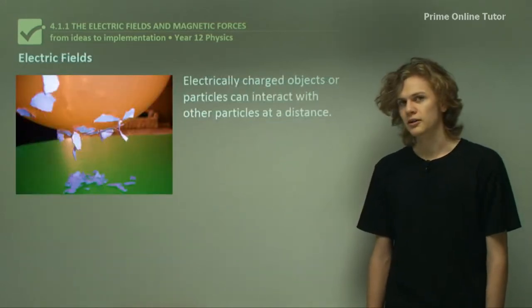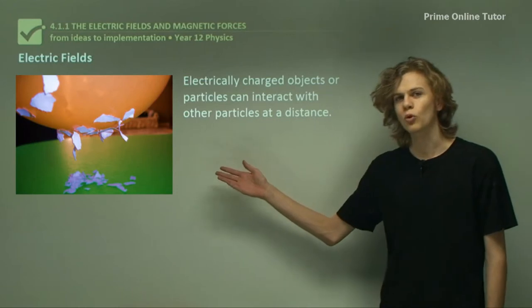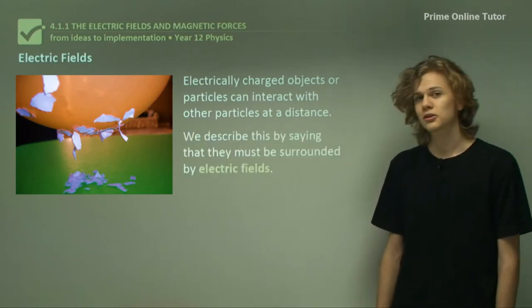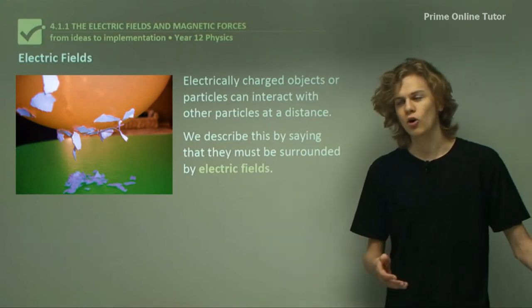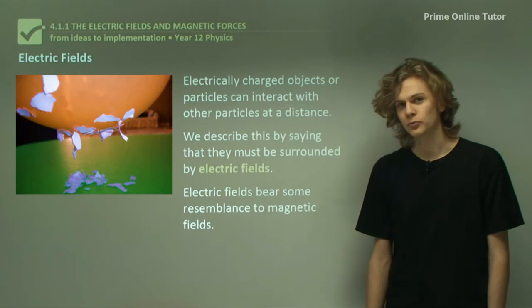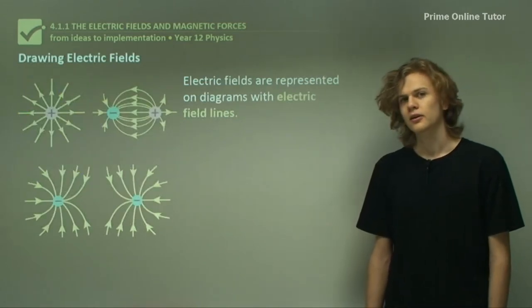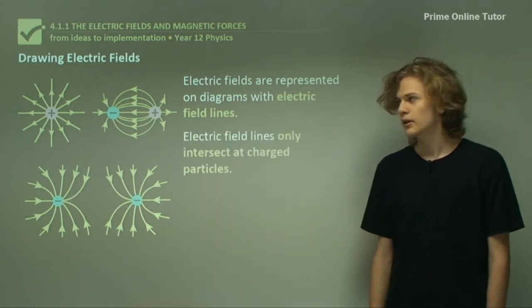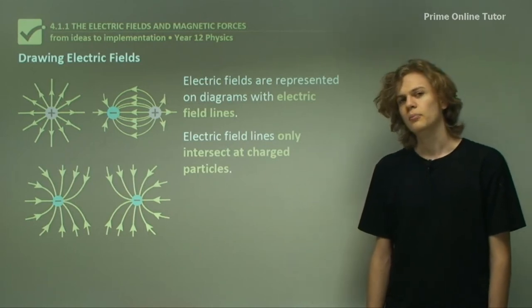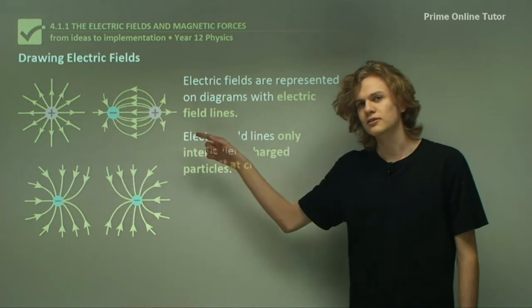Now electrically charged objects, such as this balloon, can interact with other objects at a distance, and so we can see this balloon picking up small pieces of paper. We say that the electrically charged objects must be surrounded by electric fields, which allow them to interact with other objects. We've learned about magnetic fields before, and electric fields are somewhat similar, but there are a few key differences. Now when drawing electric fields, like magnetic fields, we use electric field lines, which we can see here. Electric field lines can intersect, but only at charged particles. We can see the intersections of electric field lines at these charged particles.